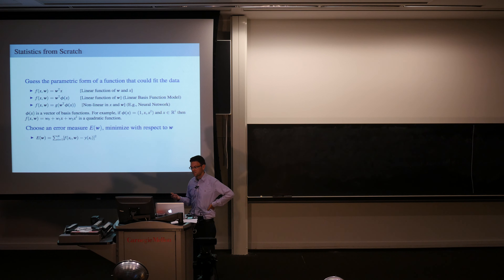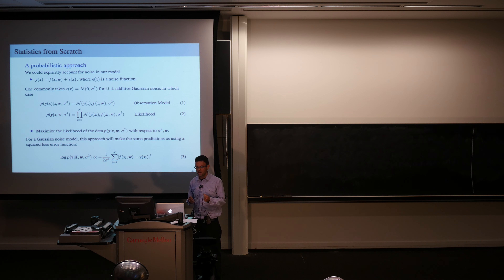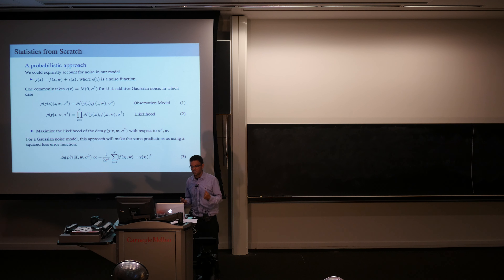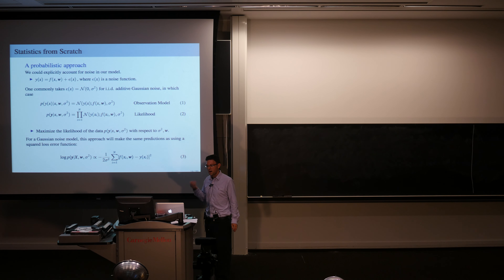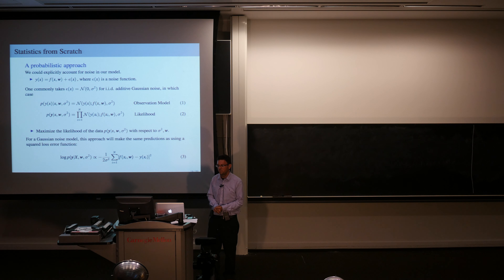We can explicitly account for noise with a probabilistic approach: assuming i.i.d. Gaussian noise, data is generated from a noise-free functional form with noise layered on top. Writing our observation model as equation 1, the expected value of any observation is our noise-free function conditioned on parameters, and the variance is noise variance σ². If we write the log likelihood, we get exactly the same error function as squared loss, making identical predictions. The likelihood allows us to interpret a chosen error measure — we might have better intuitions about whether noise is Gaussian than whether to use squared error.